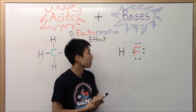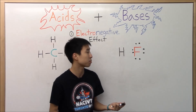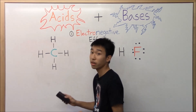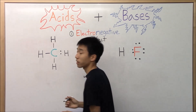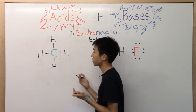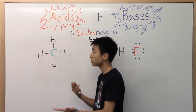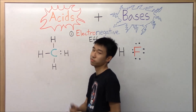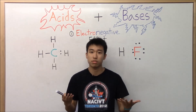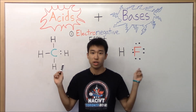Other very electronegative atoms include oxygen, fluorine, bromine, and chlorine. But if you take a look at carbon, the bond actually looks like this — the electrons are shared pretty evenly between carbon and hydrogen, because carbon is not very electronegative. He's a pretty generous guy, willing to share his electrons with hydrogen. And as a result, because of this inductive effect or electronegativity difference, there is a difference in bond strength.